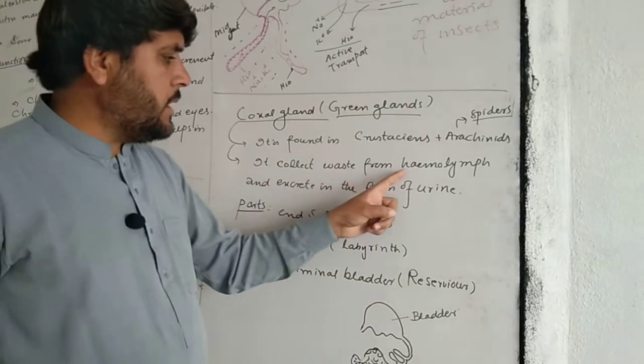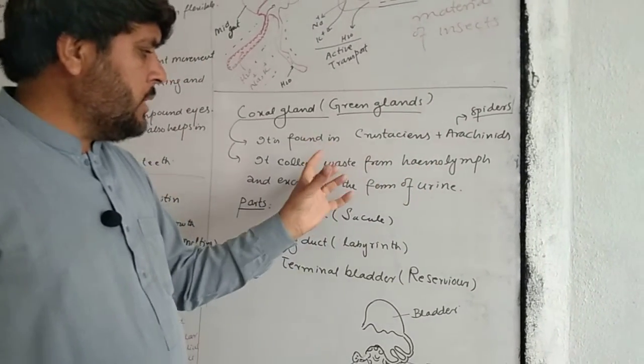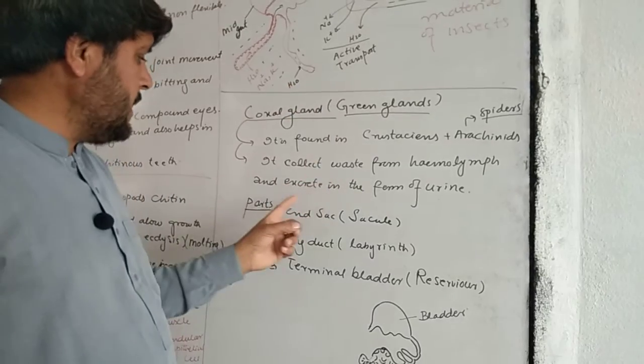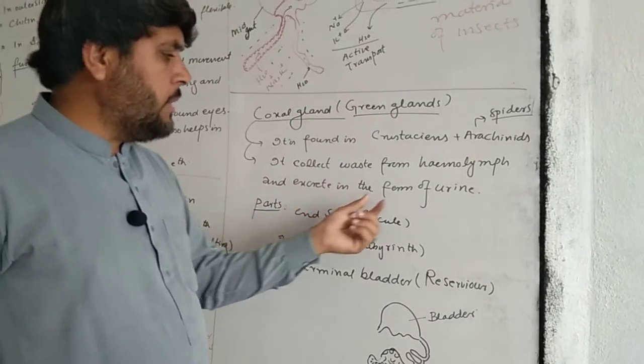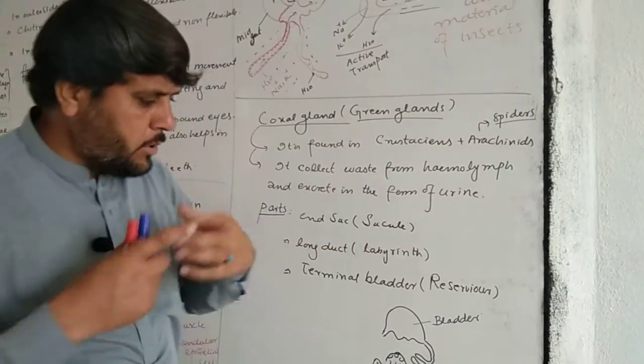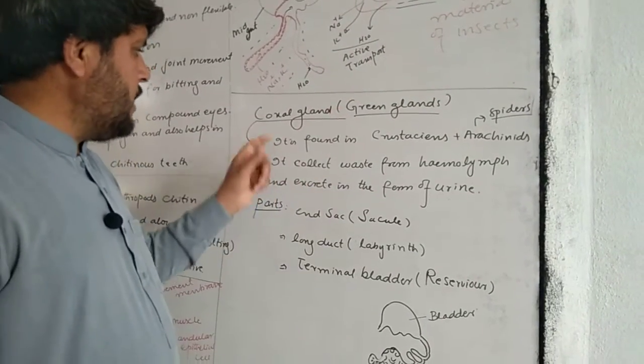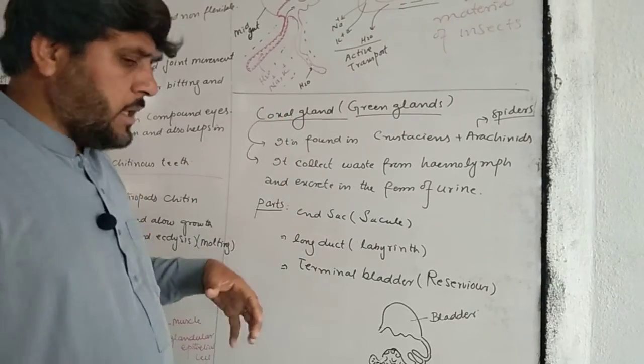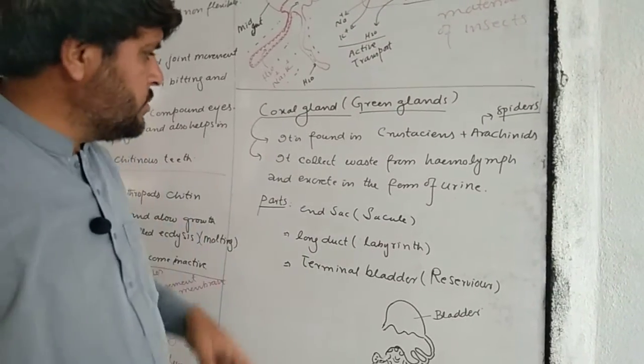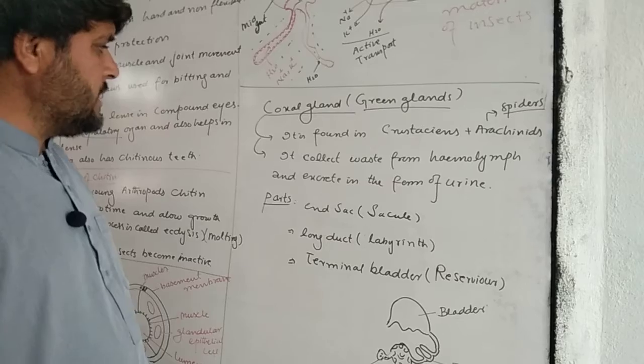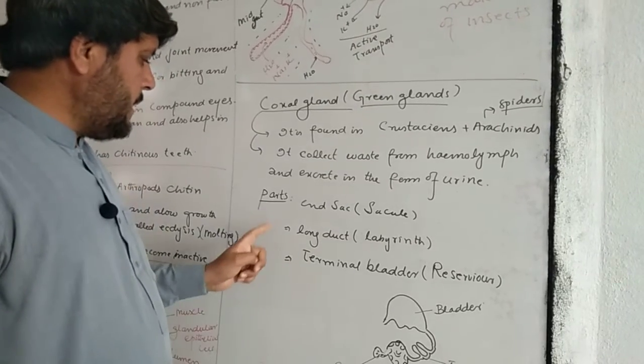The hemolymph collects waste material and excretes it in the form of urine. The green gland, also called coaxial gland, is present in the system and has different parts.